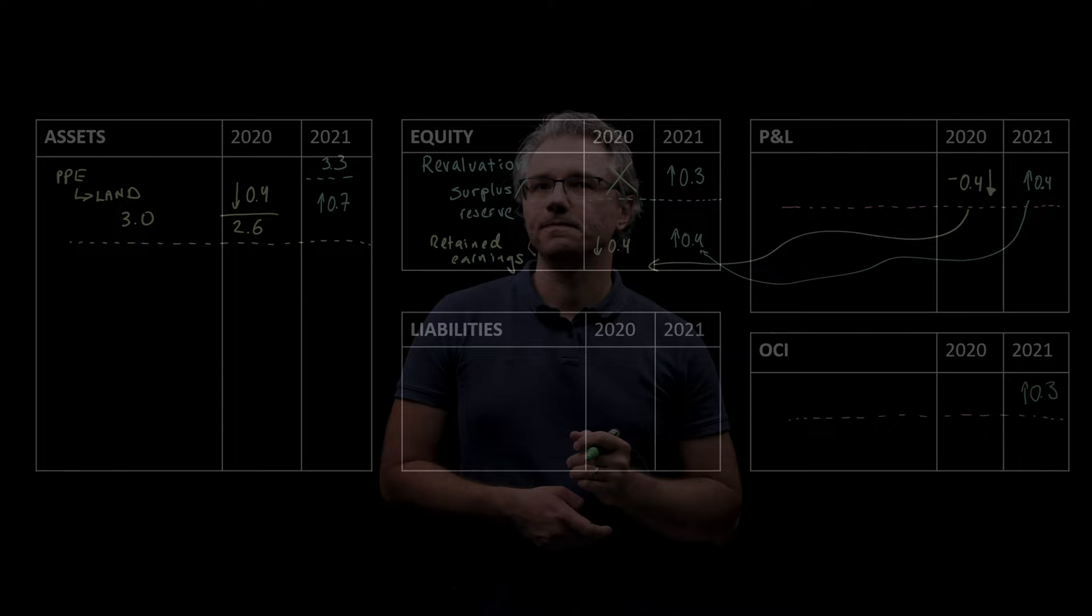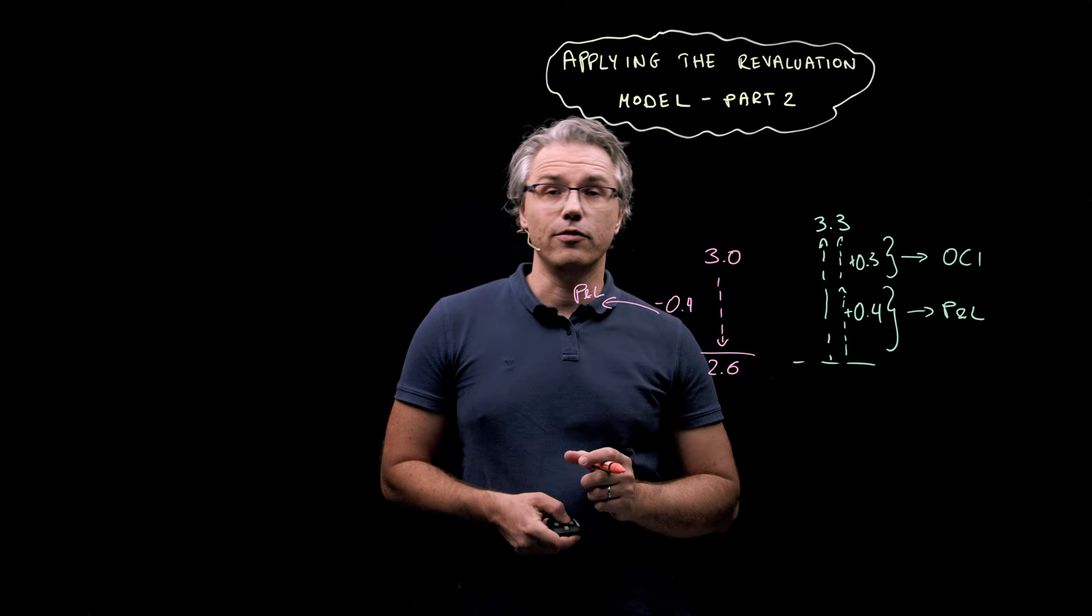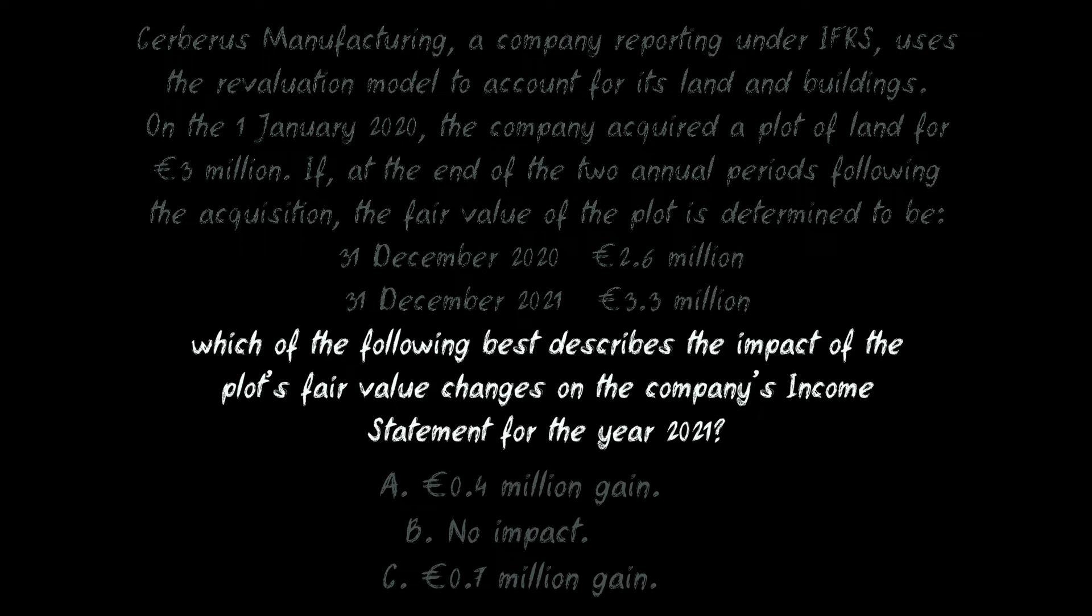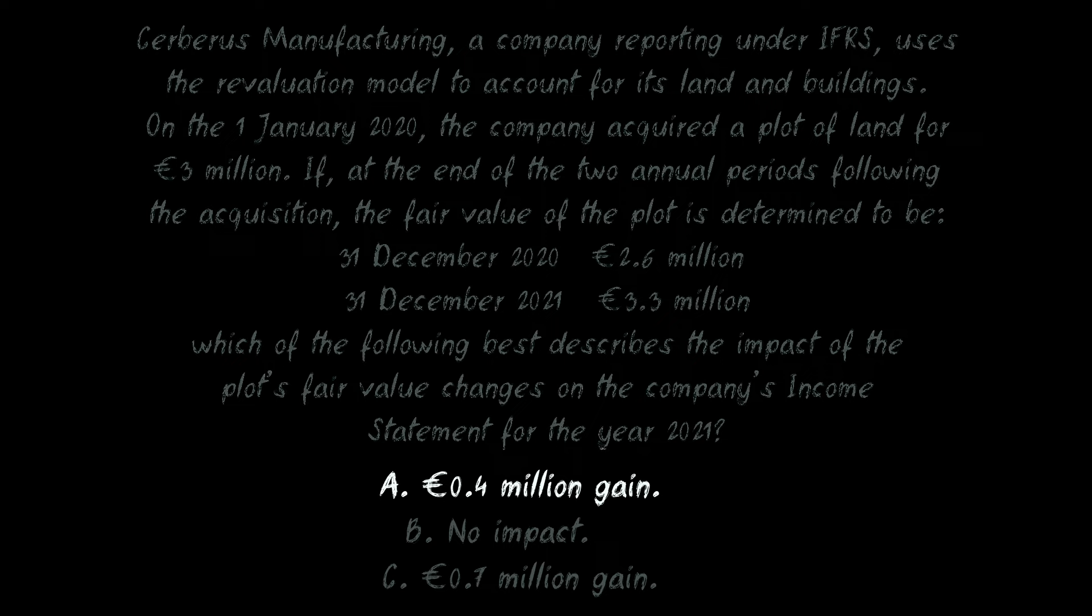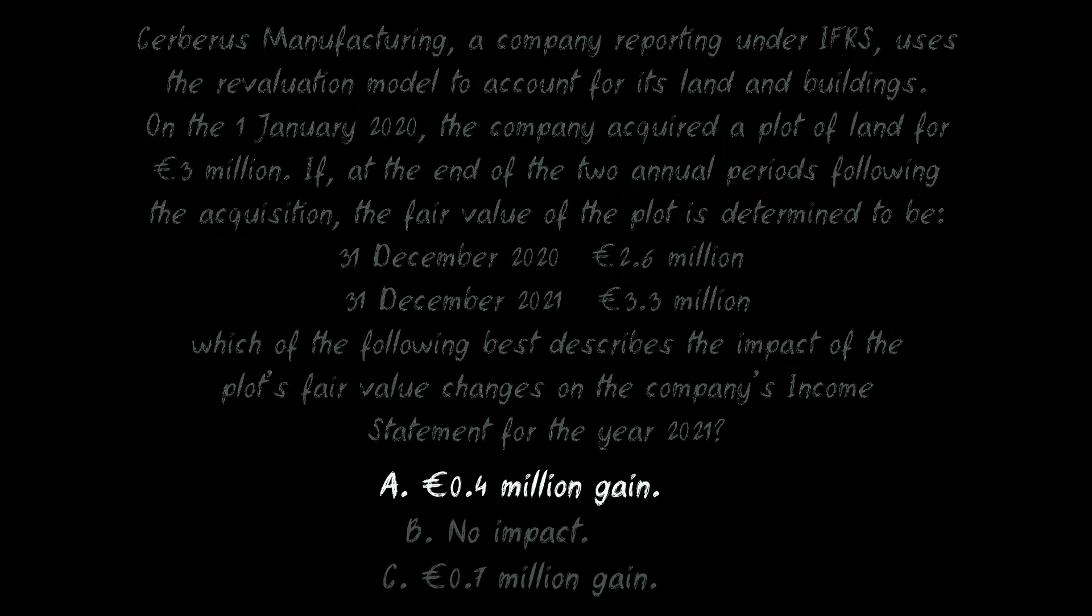Let's go back to the question and quickly check what we were actually being asked for. Now, which of the following best describes the impact of the plot's fair value changes on the company's income statement for the year 2021? Well, it's naturally a 0.4 million euro gain, reversing the previous year's loss. So, this is in line with answer A.